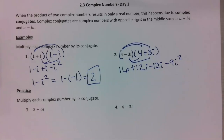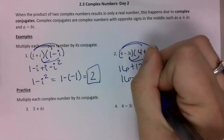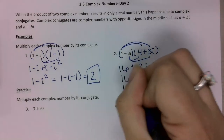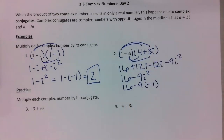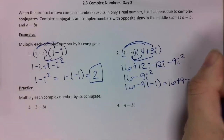The 12i's cancel out, so I just have 16 minus 9i squared. Replacing i squared with negative 1, that's really the same thing as adding 9, so 16 plus 9 is 25.